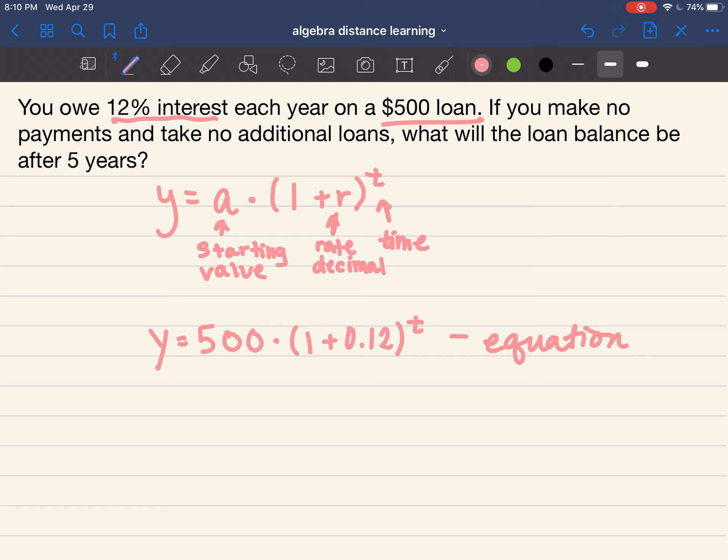So now remember it says, what will the loan balance be after 5 years? What variable are we going to plug in 5 for? Awesome, I agree. So we have y equals 500 times 1.12 raised to the 5th power.